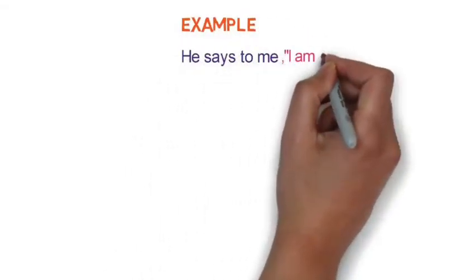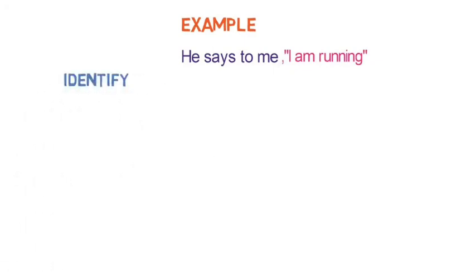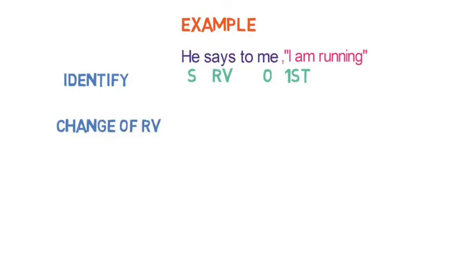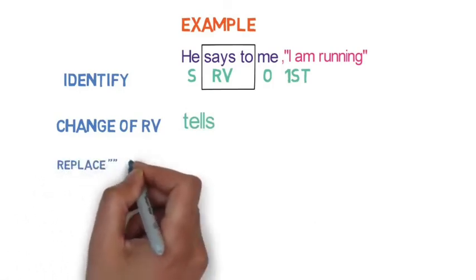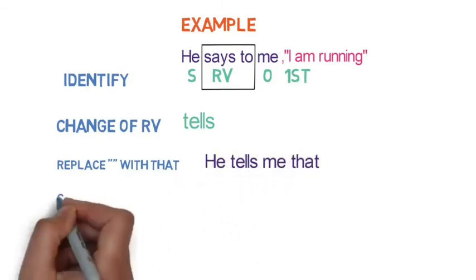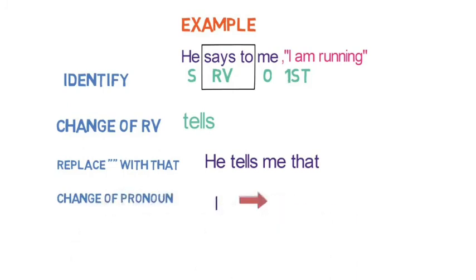Let's look at one more example to make things even clearer. Example 5: 'He says to me, I am running.' Step 1 — he is the subject, me is the object, says to is the reporting verb; since says to is in present form, we will not check the tense. Step 2: says to converts to tells. Step 3: 'He tells me that...' Step 4: I converts to he. Steps 5 and 6 are omitted as the reporting verb is in present tense. Final result: 'He tells me that he is running.'